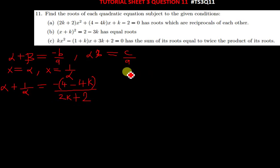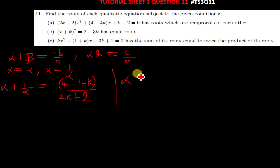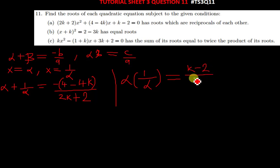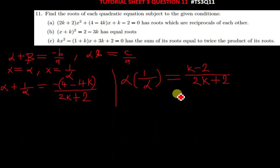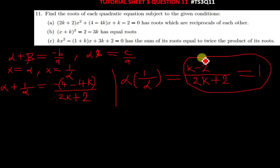When we multiply the two roots alpha and 1 over alpha, we get alpha multiplied by 1 over alpha. This equals C over A, which is K minus 2 over 2K plus 2. When you multiply alpha times 1 over alpha, you simply get 1, so from this part we can now find the value of K.